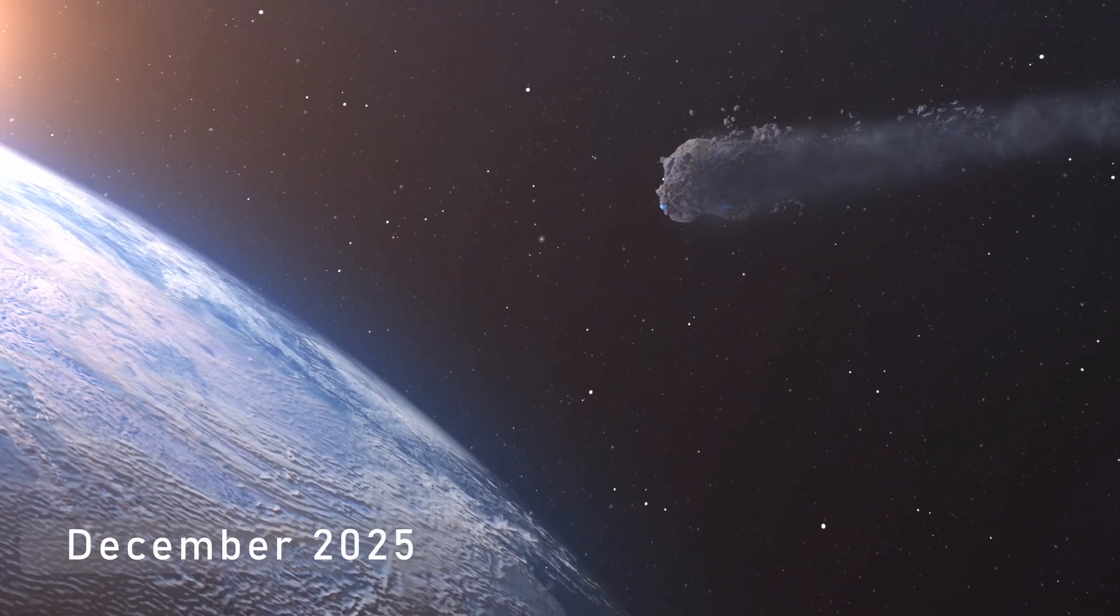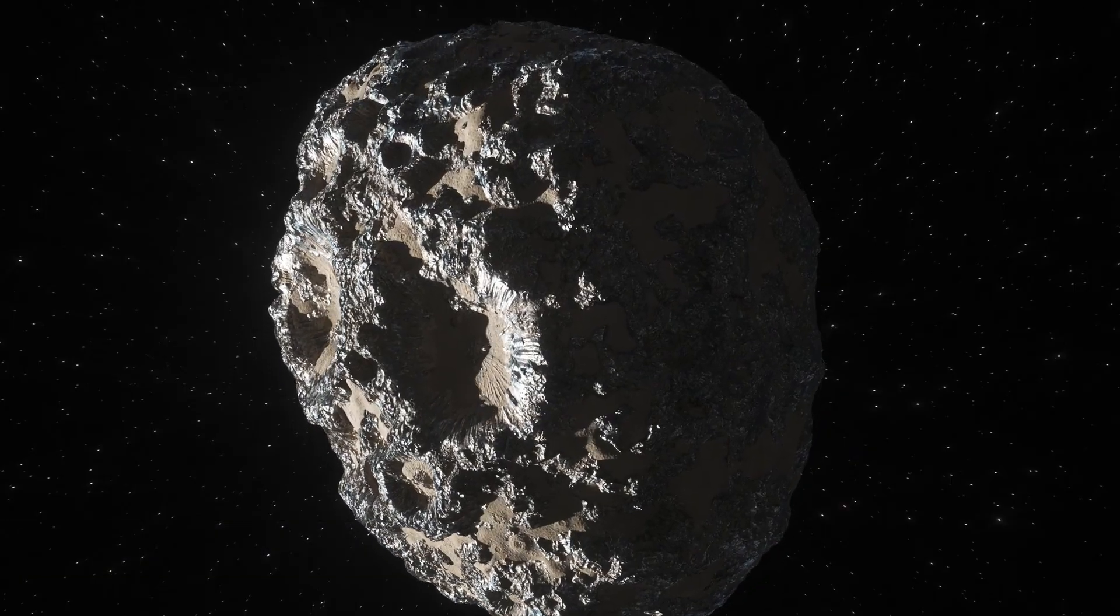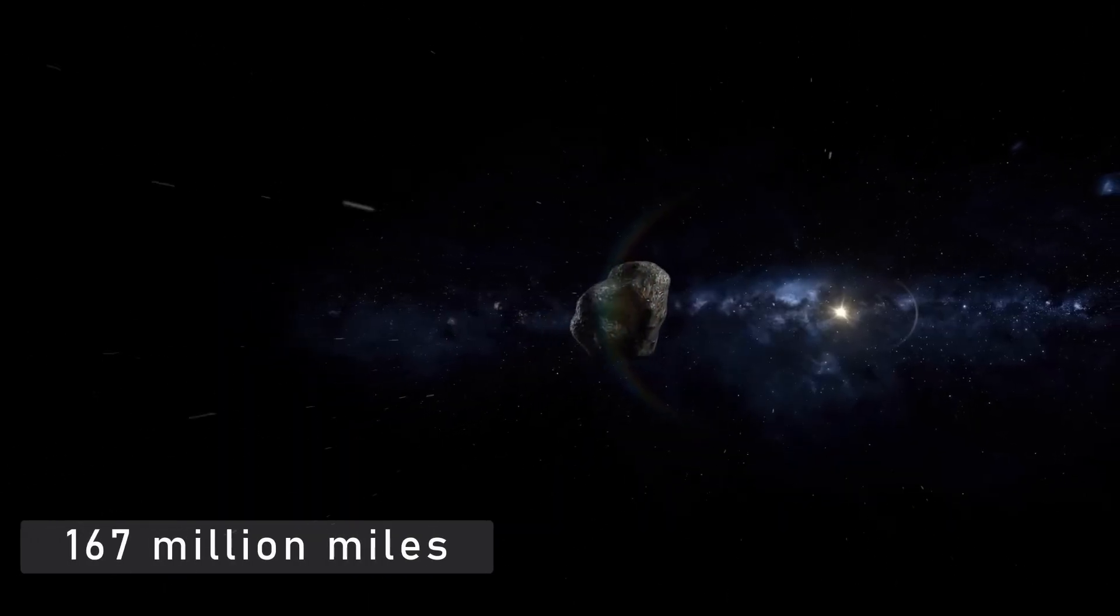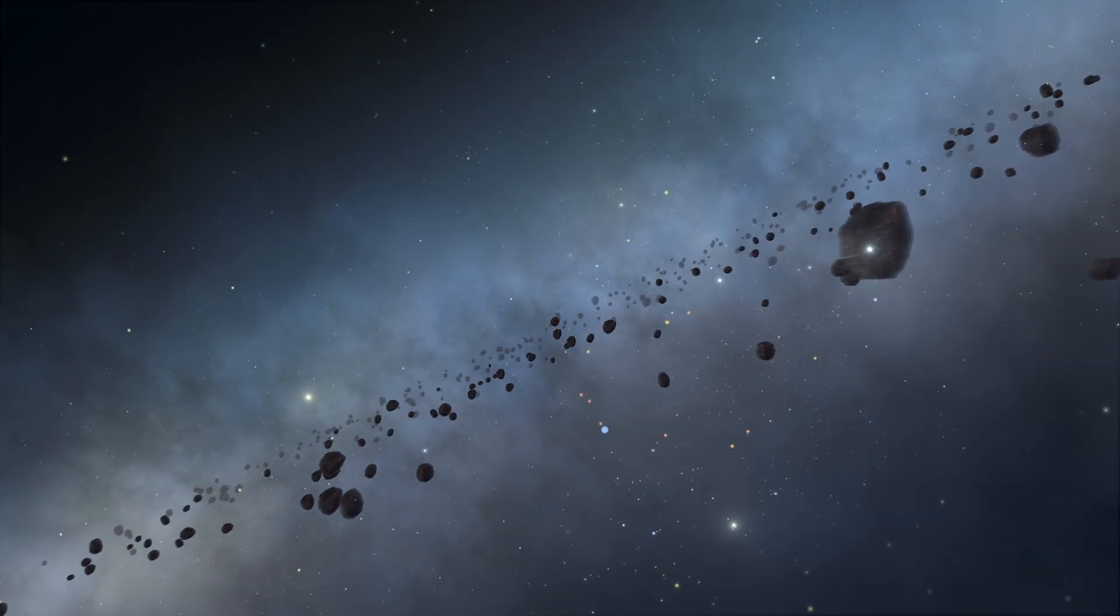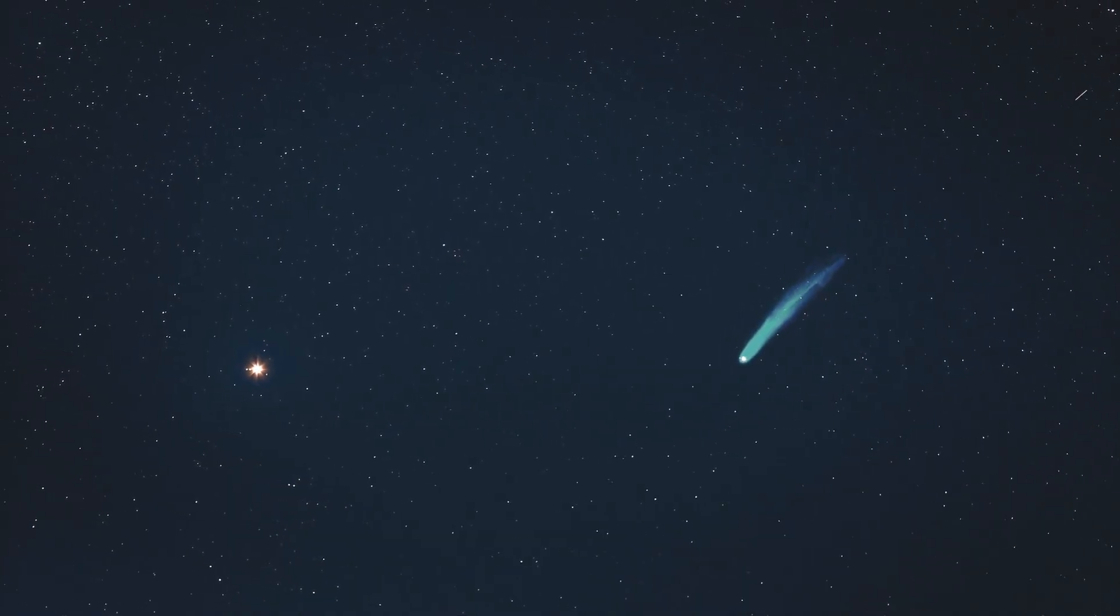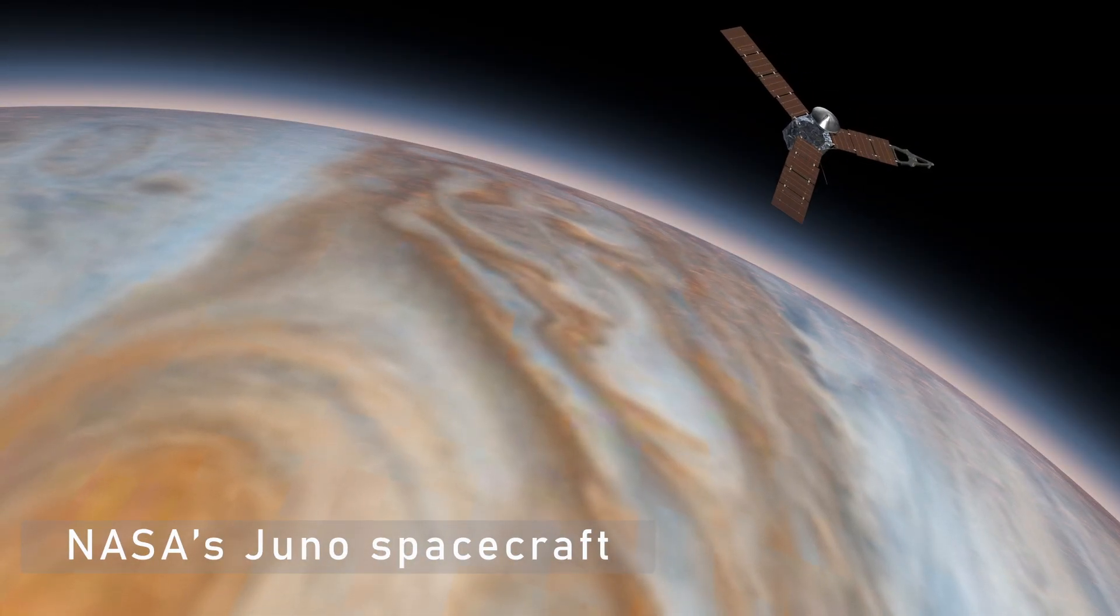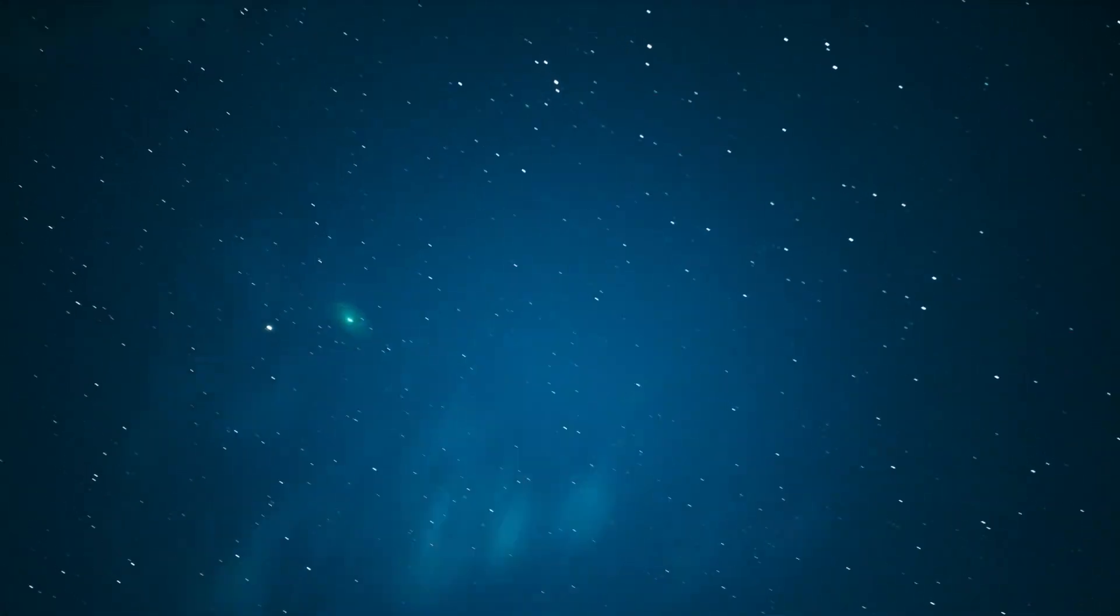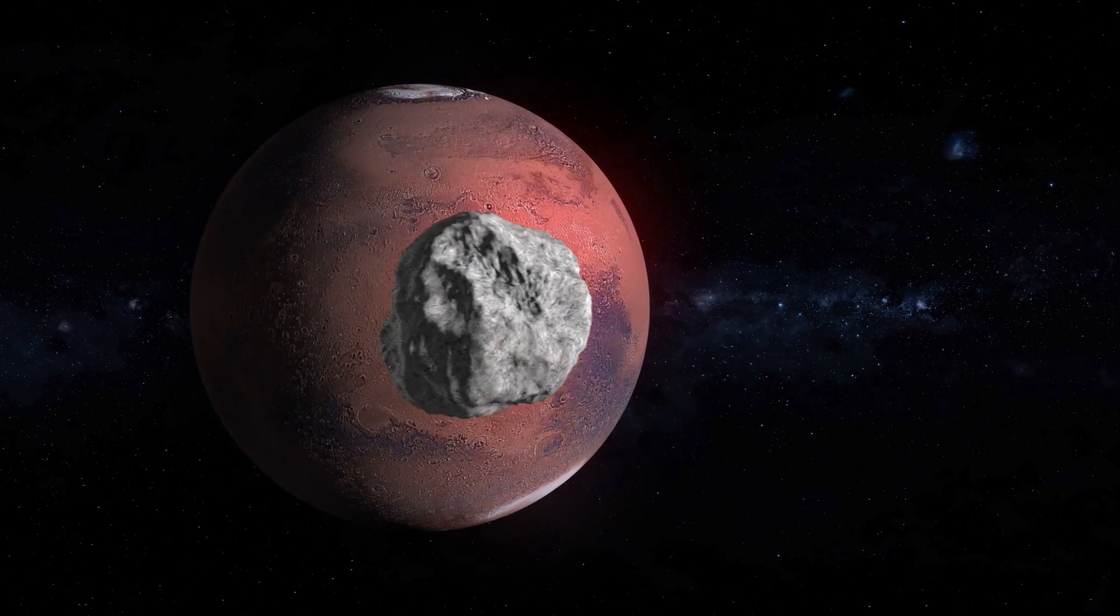By December 2025, 3i Atlas will swing past Earth's orbit at a safe 167 million miles, close enough for continued optical tracking. Then, by spring 2026, it will pass near Jupiter, where NASA's Juno spacecraft will attempt to record its passing using radio and plasma instruments. If it emits anything, natural or otherwise, we'll know.